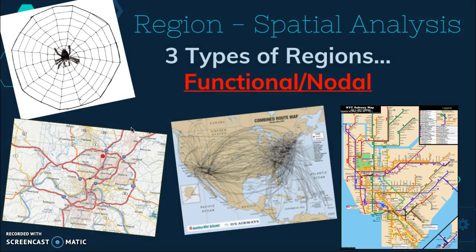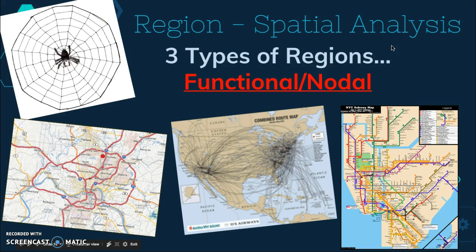Now let's talk about a different type of region: functional or nodal. This is an area organized around a node or specific focal point — like a spider web where the spider in the center is the node. Functional and nodal regions are based on transportation, communication, and the economy. Examples include radio stations, television viewing areas, subway systems, outlet malls, highway systems, and airplane routes — all regions focused around a specific activity that is transportation, communication, or economic.